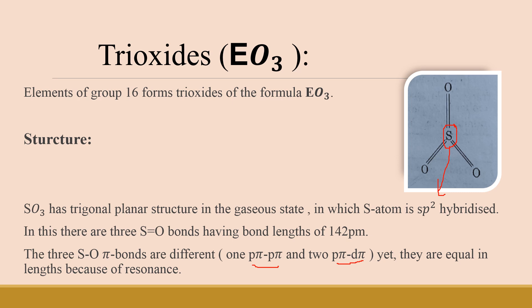The nature of all three bonds in SO3 is different, but the bond lengths of all three bonds are the same. This is because of resonance — they form resonating structures with each other, making the bond lengths equal even though the nature of each bond is different.